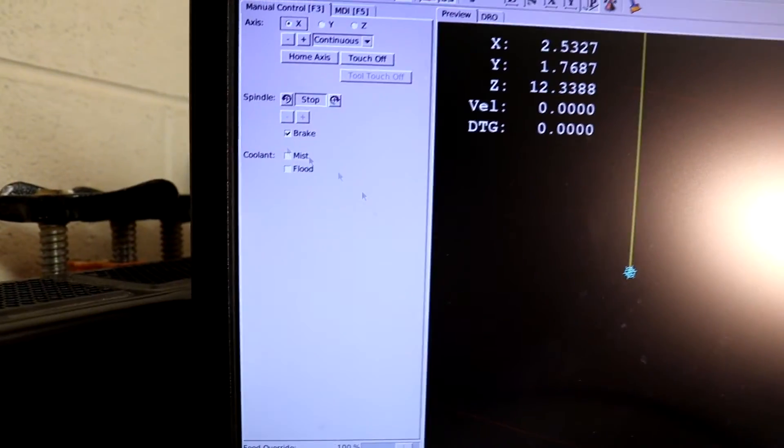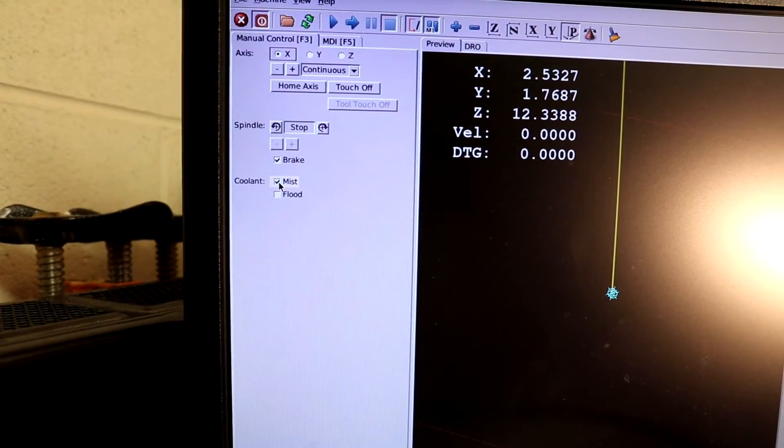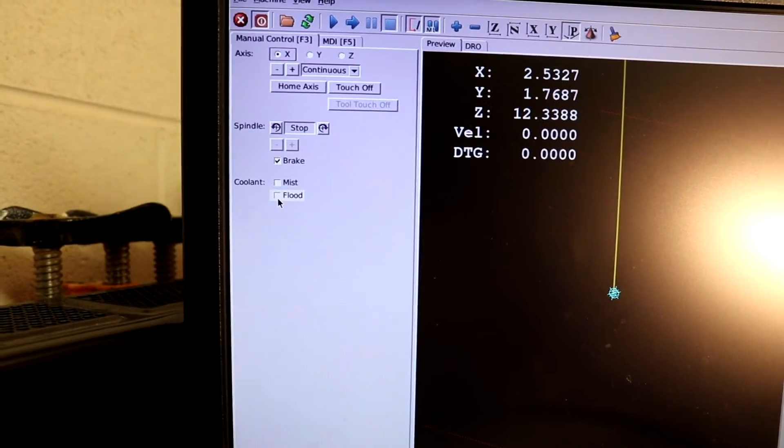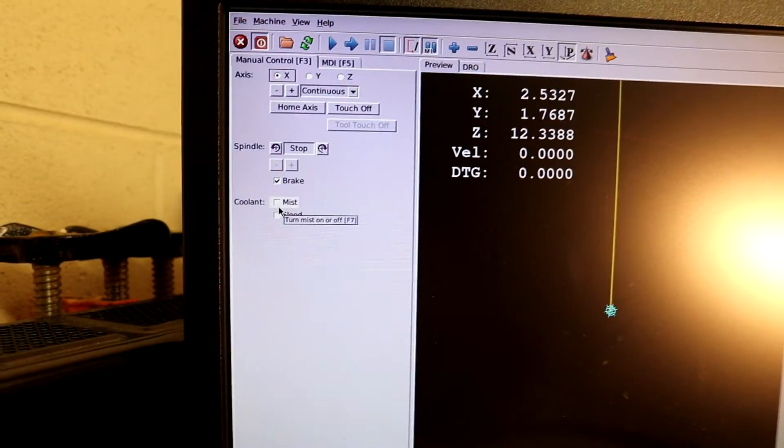That then is controlled on the Pico Universal stepper controller with an additional solid-state relay. To turn the mist on manually, as you can see it's as simple as selecting mist or flood. They're both mapped to the same device.